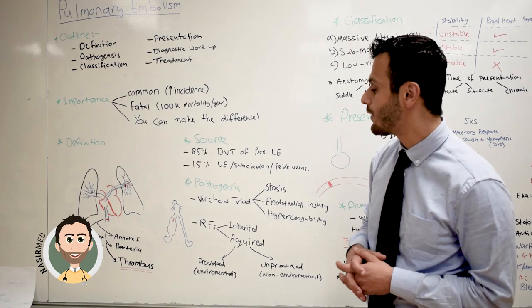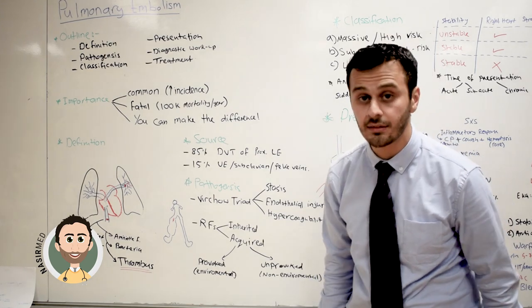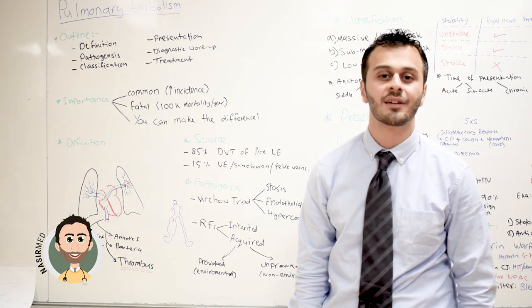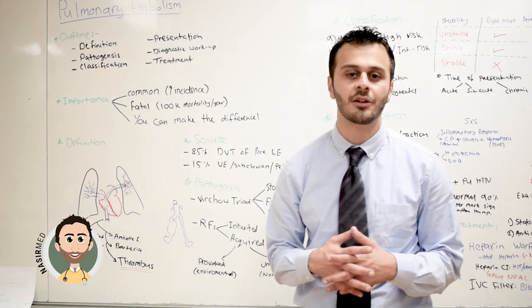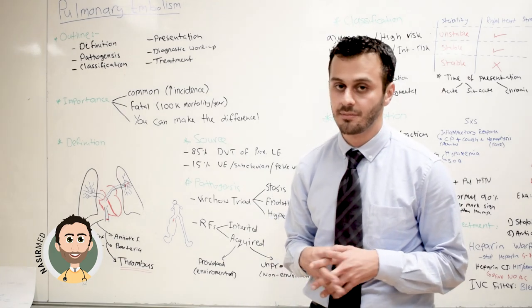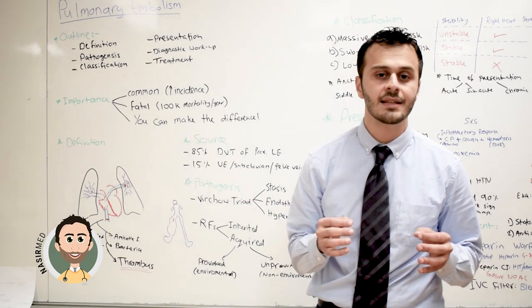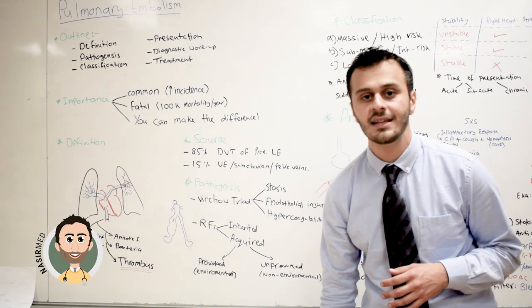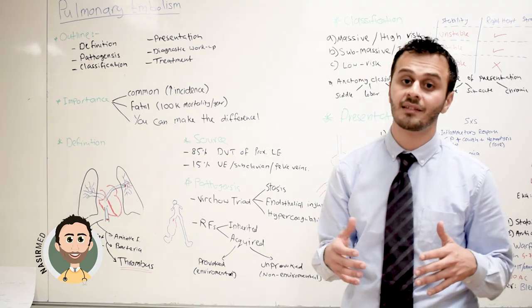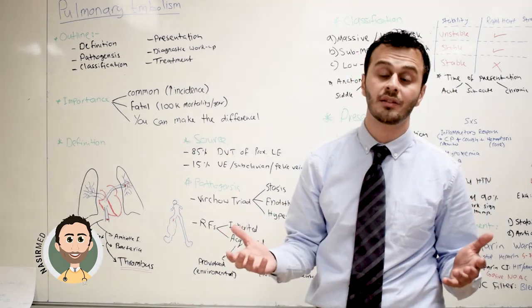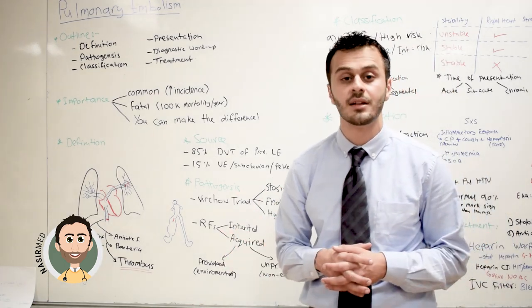However, the distal lower extremity veins are less likely to cause pulmonary embolism. The reason is that the distal DVTs are a lot more likely to dissolve by themselves.